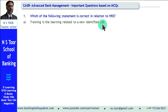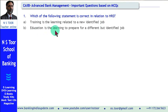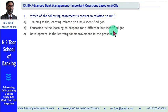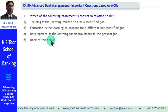The first statement is: (A) Training is the learning related to a new identified job. Option B: Education is the learning to prepare for a different but identified job. Option C: Development is the learning for improvement in present job. And D: None of the above.